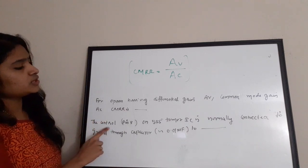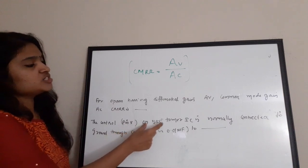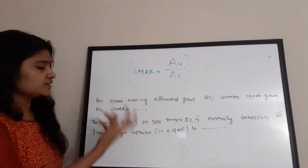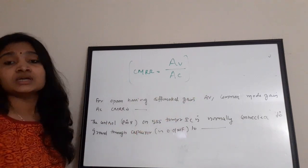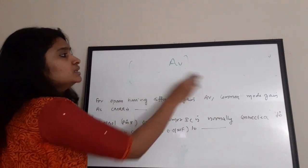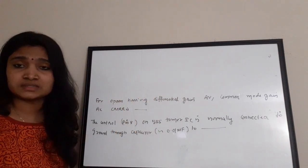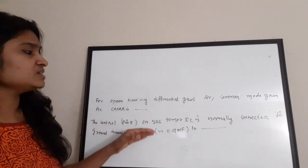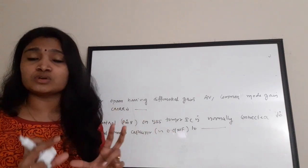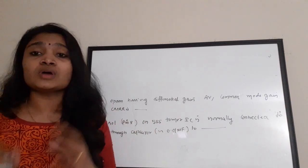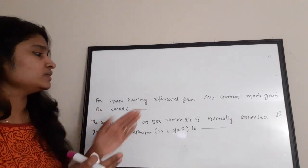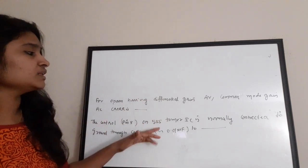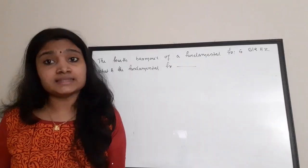The control pin — pin 5 of the 555 timer IC — is normally connected to ground through a capacitor to prevent false triggering due to the presence of noise at that pin. Noise signals at pin 5 can cause false triggering of the 555 timer IC, so connecting it to ground through a capacitor avoids this. This was also covered in previous videos on the 555 timer IC.